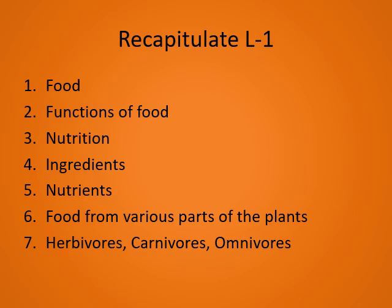Next, nutrition. Nutrition is a process of taking food and utilizing it for the growth and development of the body. Next, we have learned about ingredients — the materials that are needed to prepare a particular type of dish are called ingredients. Nutrients are the chemical substances in food that our body needs.